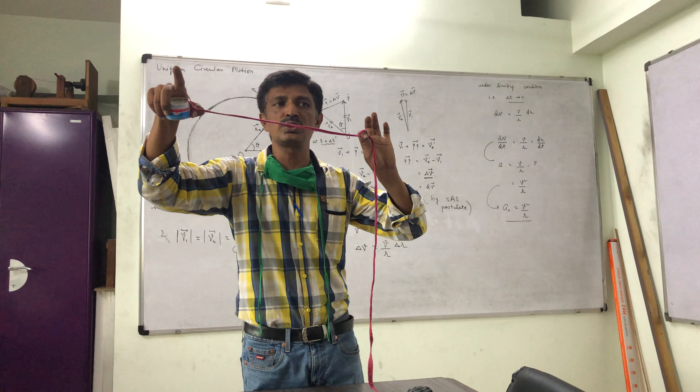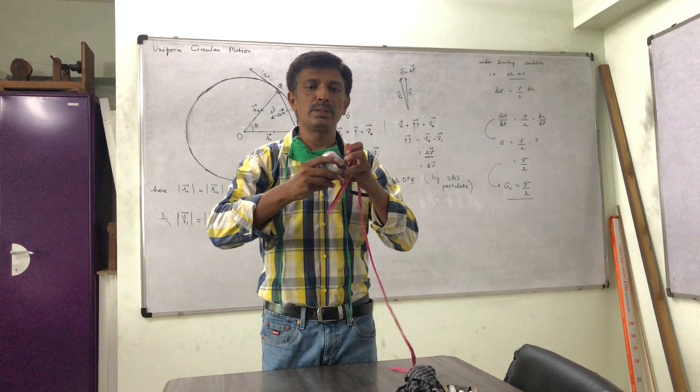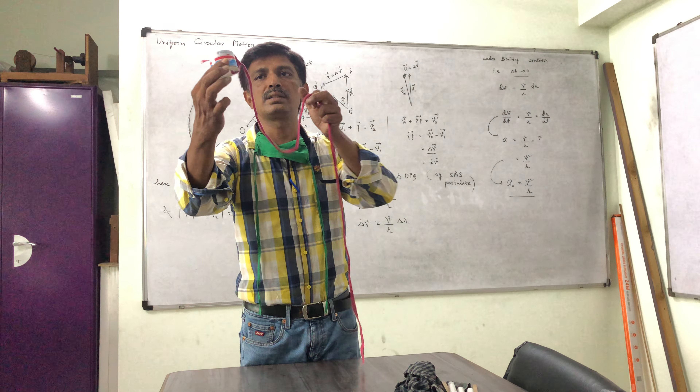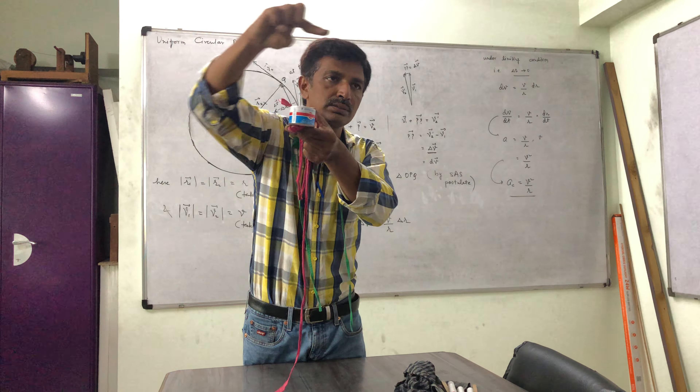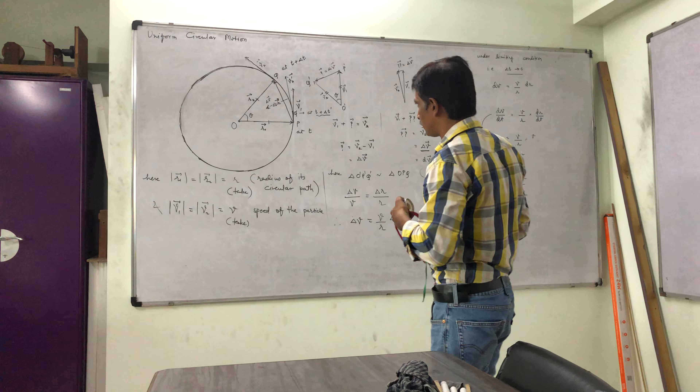So here velocity is in this direction. But after a certain moment, the velocity is in this direction. So the magnitude is constant, but by direction, velocity is not constant.